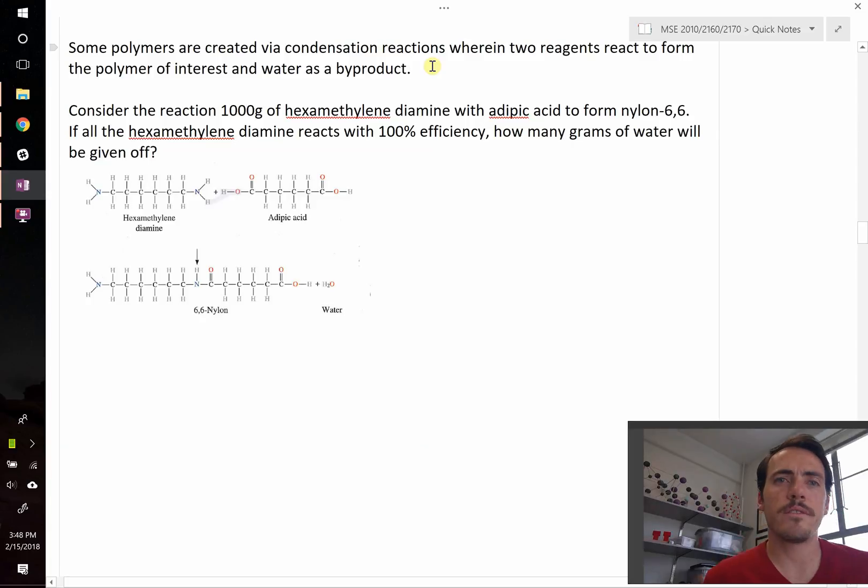Okay, this question states the following. Some polymers are created via condensation reactions wherein two reagents react to form the polymer of interest and water as a byproduct, hence condensation.